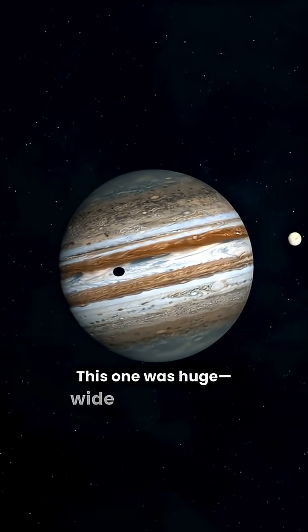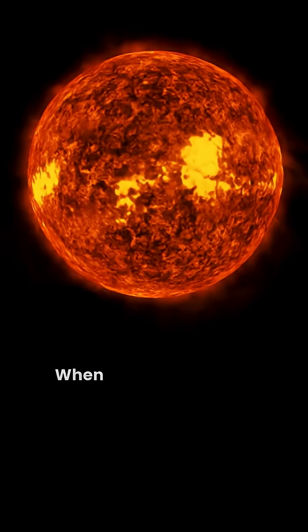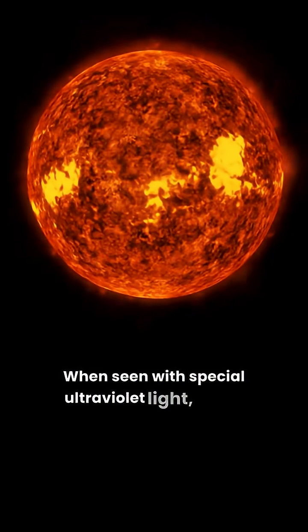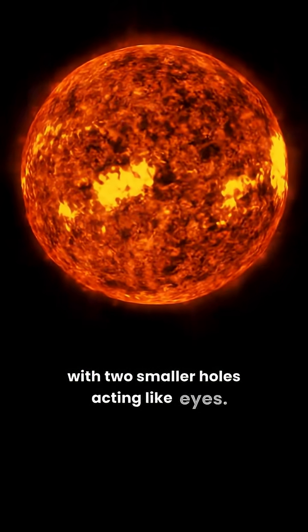This one was huge, wide enough to fit five planets the size of Jupiter across. When seen with special ultraviolet light, it even looked like the Sun had a spooky face, with two smaller holes acting like eyes.